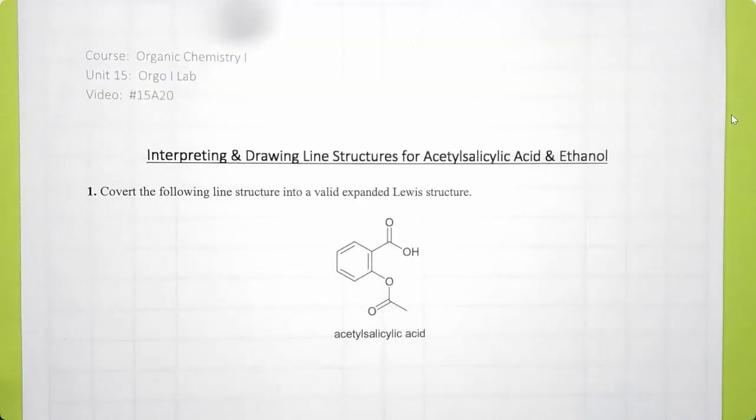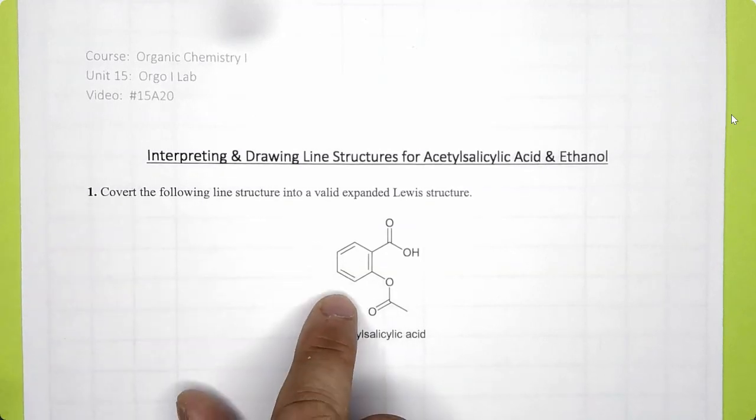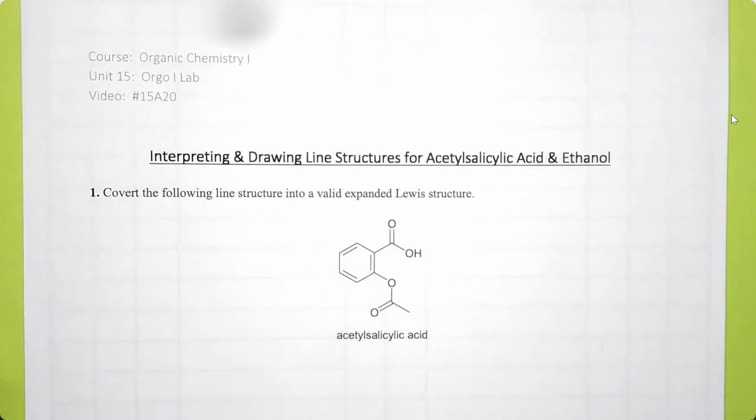Alright, for number one, convert the following line structure into a valid expanded Lewis structure. Some textbooks call line structures line angle formulas. Other textbooks call them line bond structures. They all follow the same rules.